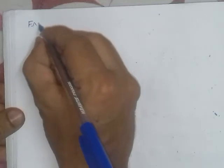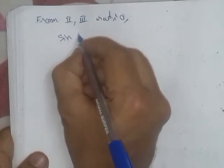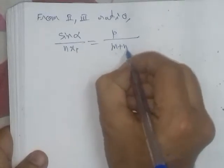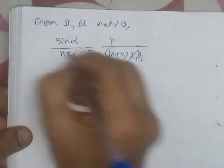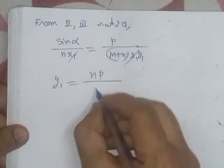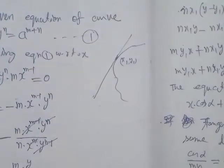From the second and third ratios, we equate: cosα / (m·y1) = p / (m+n)·x1·y1, giving us x1. Similarly, sinα / (n·x1) = p / (m+n)·x1·y1, giving us y1. Transposing denominators to numerators, sinα will reach the denominator. Adding equations four and five together allows us to find x1 and y1 individually.